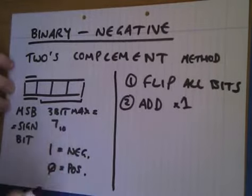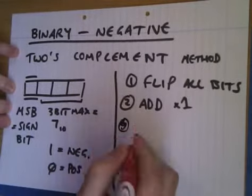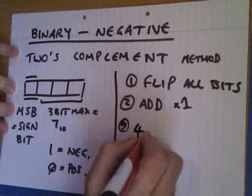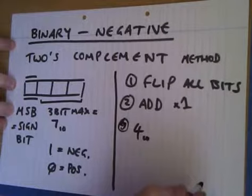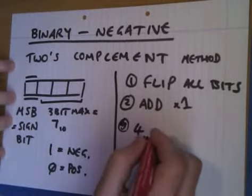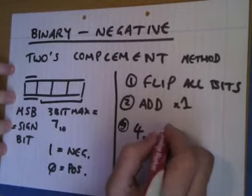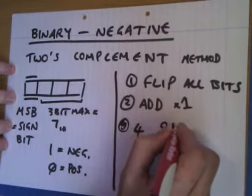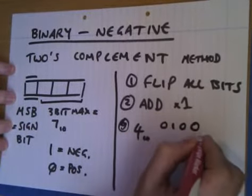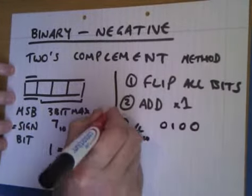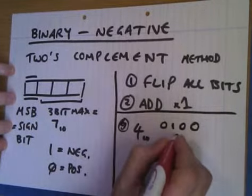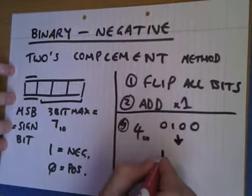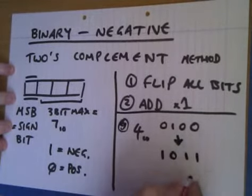For example, the number four. I want to represent that as a negative four in binary using two's complement. So I must first of all convert it to binary, which is zero one zero zero. OK, now I'm going to flip the bits. One, zero, one, one, and then add one.